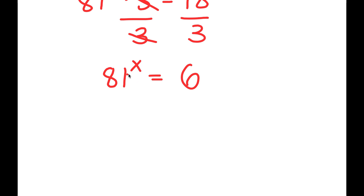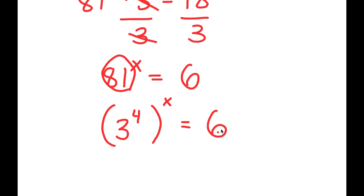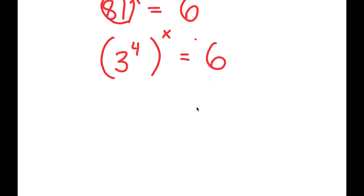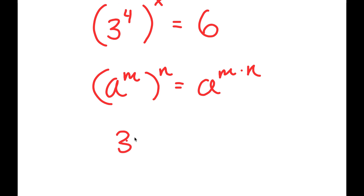Now from here, we can already tell that x is going to be a fraction because 81 is greater than 6. So I'm going to rewrite 81 as 3 to the power of 4. So I get 3 to the power of 4 to the power of x is equal to 6. And now, if I have something in the form a to the power of m to the power of n, this equals a to the power of m times n. So 3 to the power of 4 to the power of x equals 3 to the power of 4x, which is equal to 6.